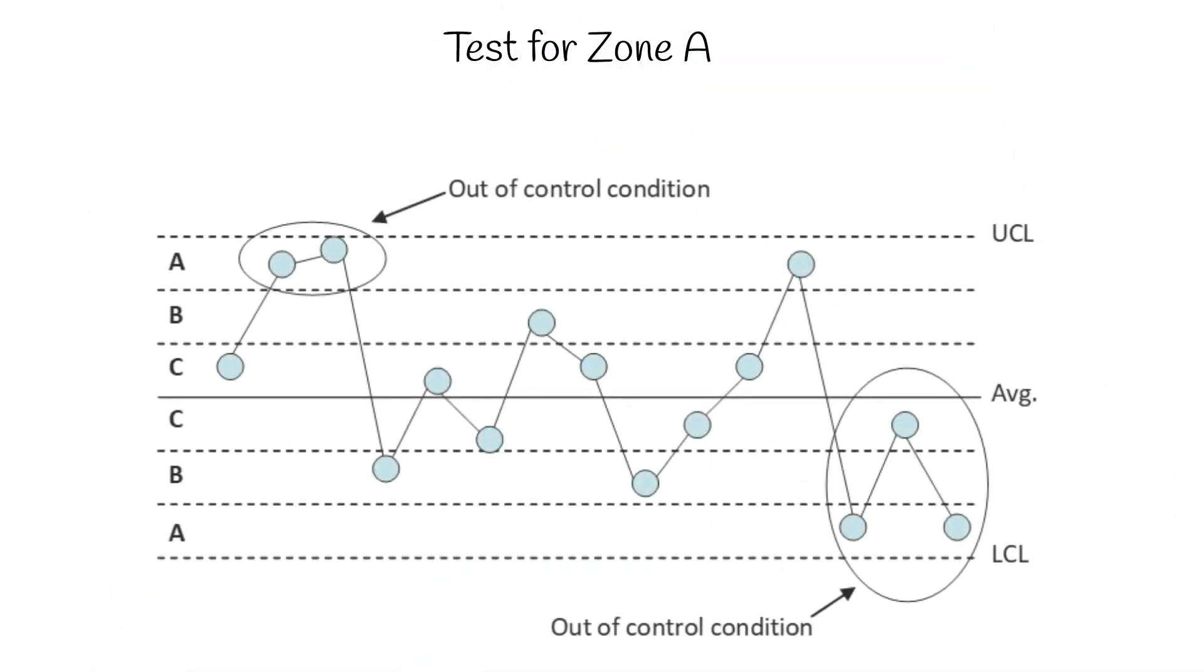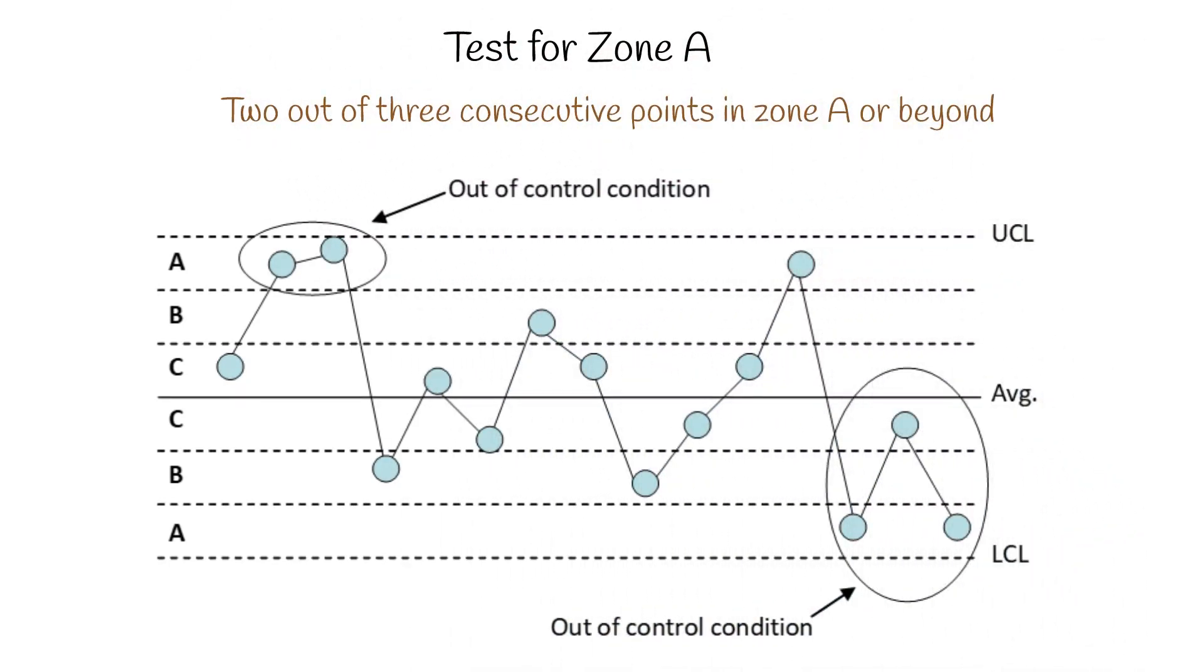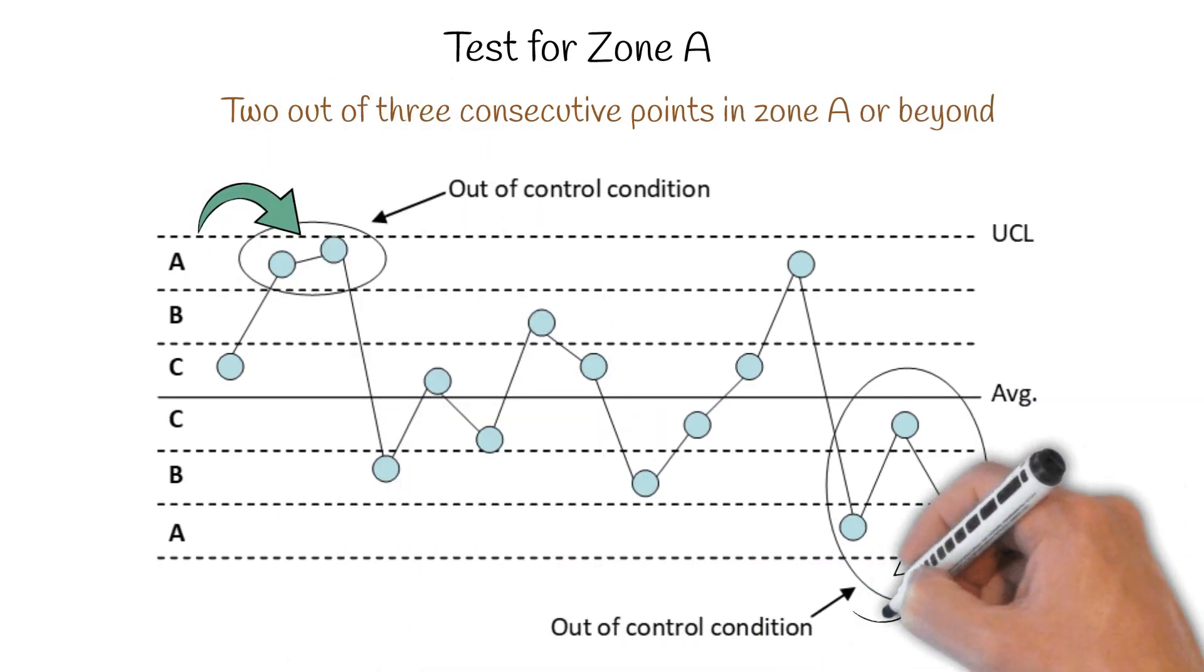We'll start with zone A. Here's a test for zone A. If you have two out of three consecutive points in zone A or beyond, you have a special cause of variation, an out of control situation. And there are two examples here.